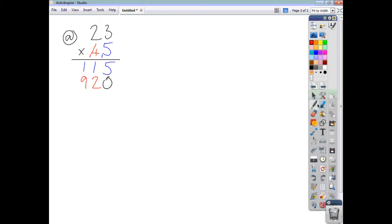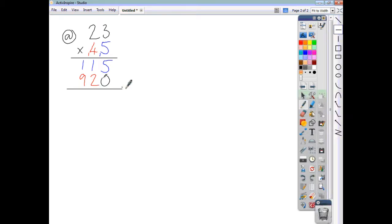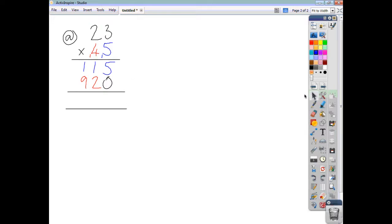And then finish it off by adding your 2 lines of working and you'll get your answer which is 5 add 0 is 5, 1 add 2 is 3, 1 add 9 is 10. That's all you have to do.